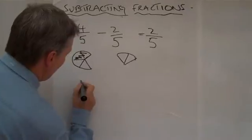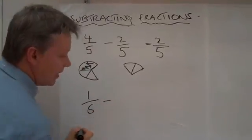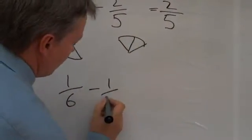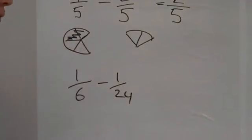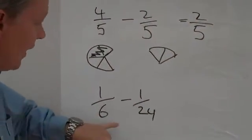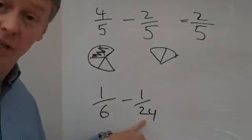So, the question is going to be one-sixth, take away one-twenty-fourth. What number will make that six into a twenty-fourth? It's going to be four.